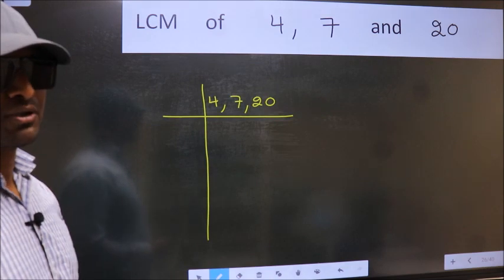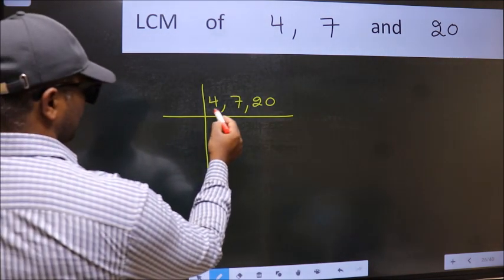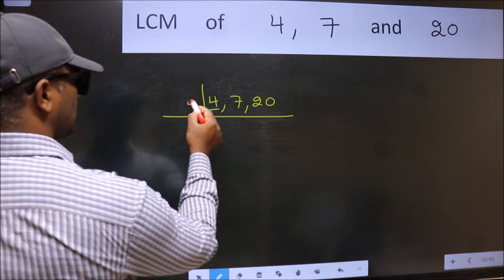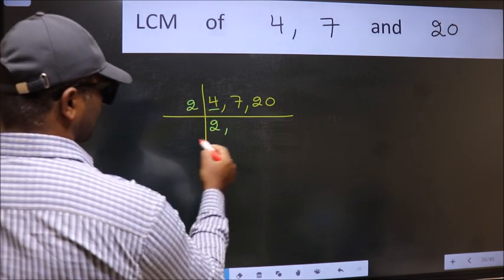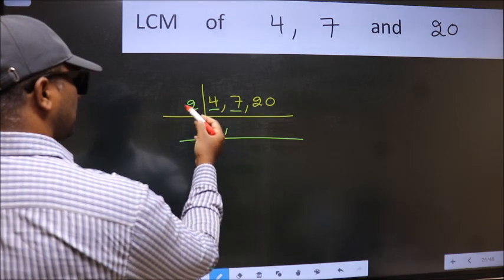Now we should focus on the first number which is 4. 4 is 2 times 2. The other number 7 is not divisible by 2, so we write it down as it is.